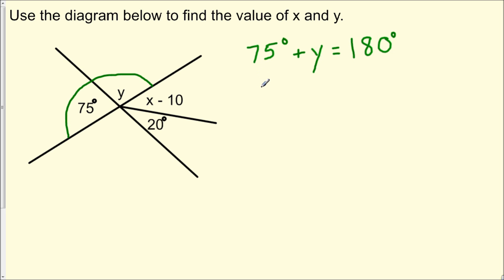So now to solve for the measure of angle y, we could subtract 75 degrees from both sides of this equation. And now we note that 75 degrees minus 75 degrees is zero, so this cancels out, leaving us with y equals 180 degrees minus 75 degrees, which is 105 degrees.